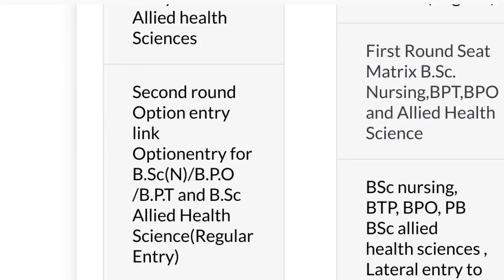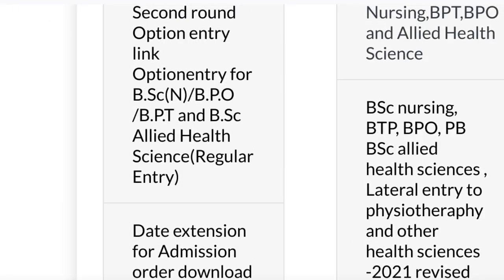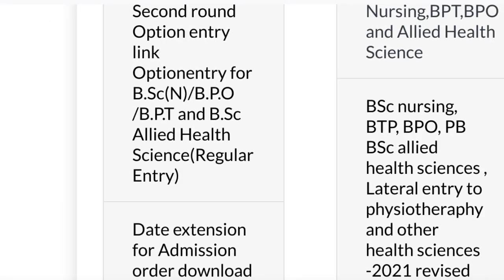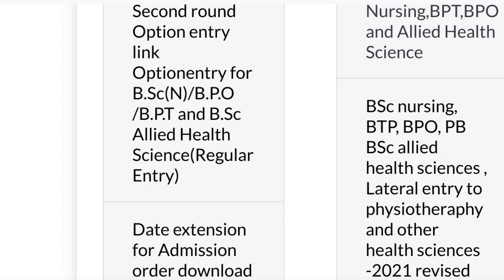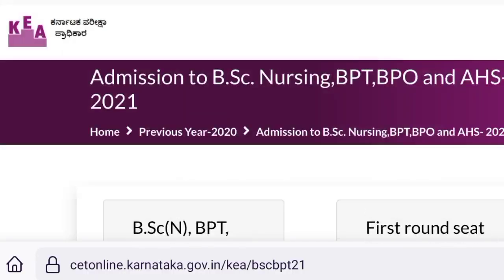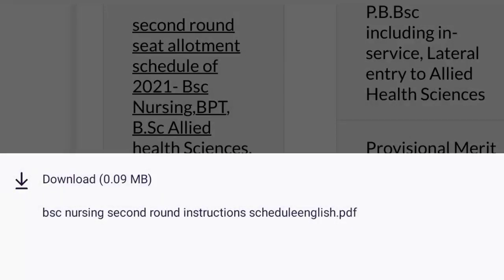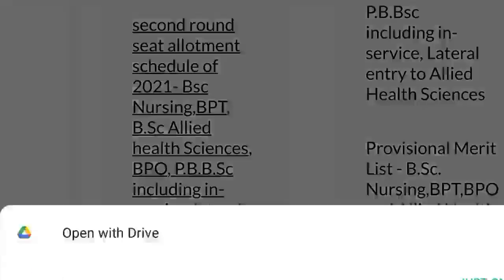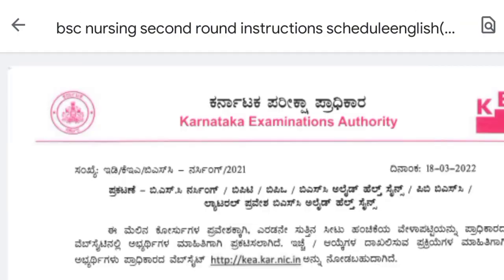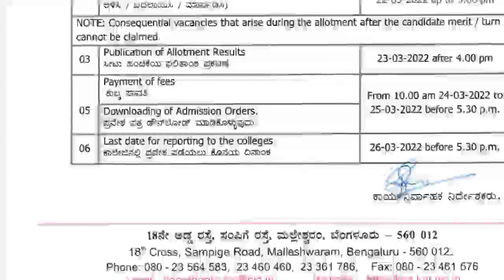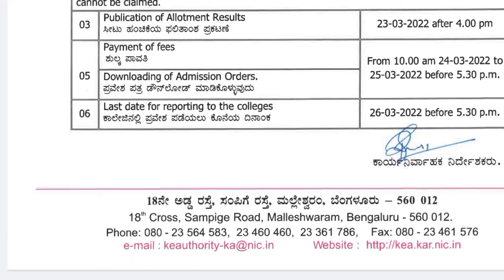If you click on the second round option, you can click on the not found or error. This is the option of booking. If you click on the seat level, you are running out of 10 hours. That is the option of payment of fees.